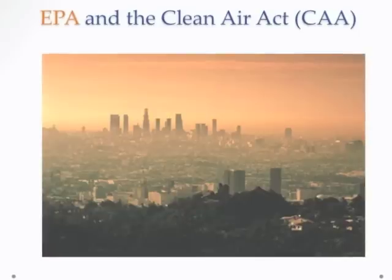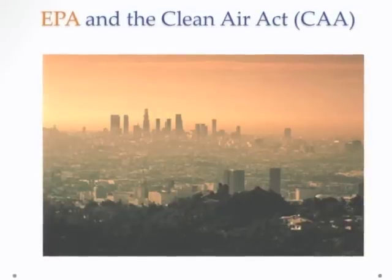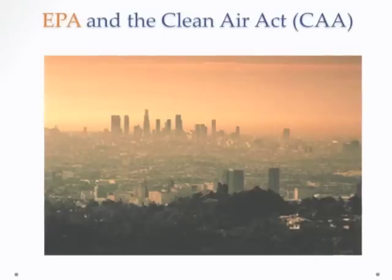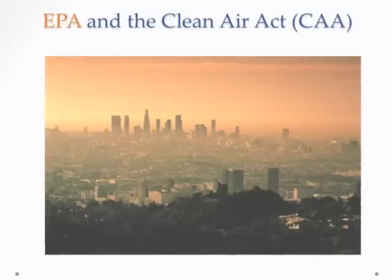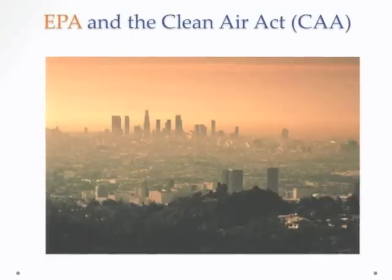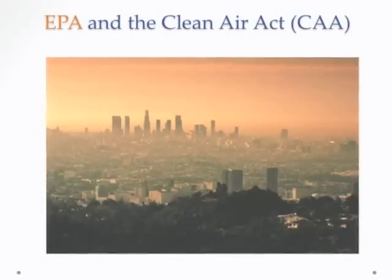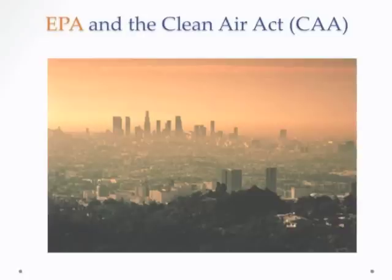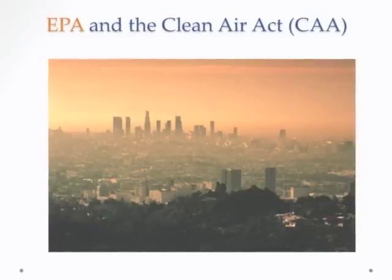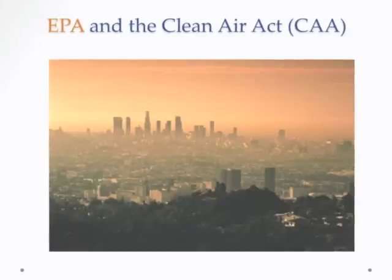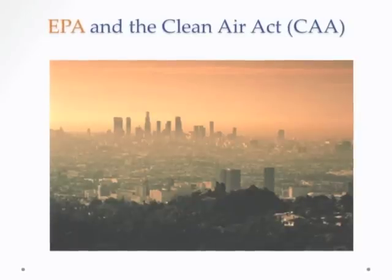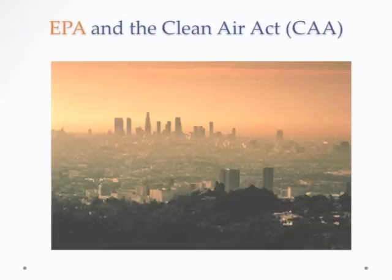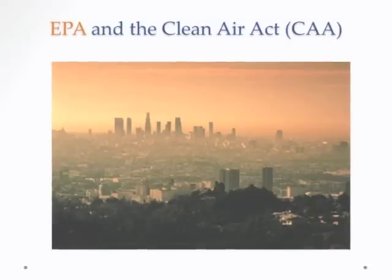The U.S. Environmental Protection Agency was formed in 1970. Its main role was, and continues to be, to enforce the provisions of the Clean Air Act (CAA). The EPA has been very successful at cleaning up the air in the U.S. generally and particularly in American cities. If you visited California 20 or 30 years ago, the pollution was extreme — L.A. smog was intense — but now it's been greatly reduced. There are still problem areas, but the areas of air pollution in the U.S. have been greatly reduced.